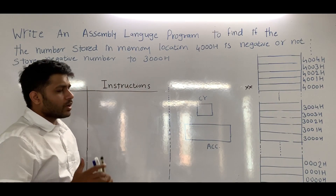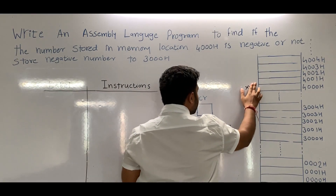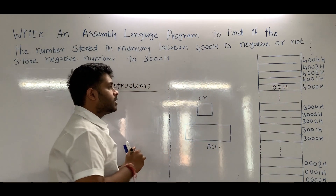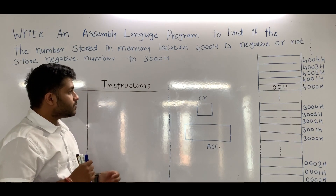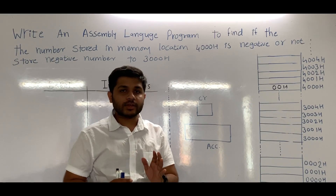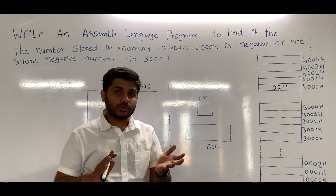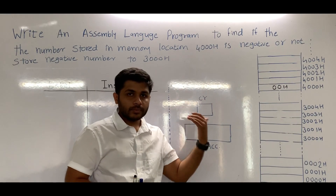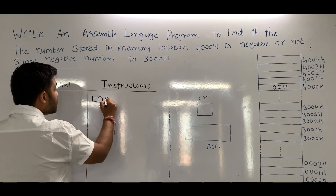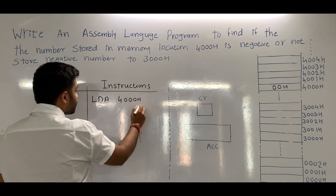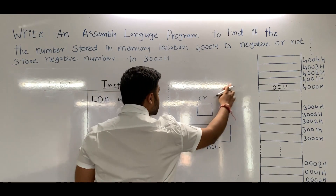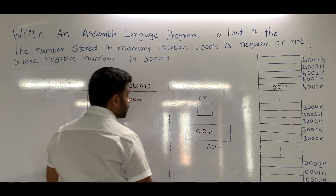First of all, assume that the data stored in 4000H is 0. We need to move this data to the accumulator because in the memory location we cannot directly check whether the data is negative or positive. To process it, we have to transfer this data to the microprocessor. So let's load this data to the accumulator using the instruction LDA 4000H. When we execute LDA 4000H, the data will be moved to the accumulator.